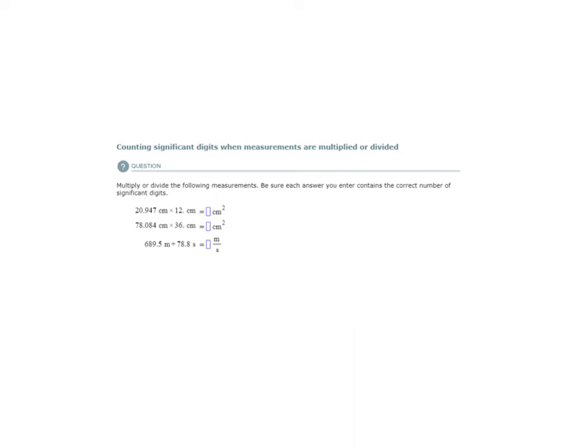In this topic, we are counting significant digits when measurements are multiplied or divided. The rules for multiplication and division when counting significant digits is quite easy. The rule is that your final answer is limited to your least significant value.